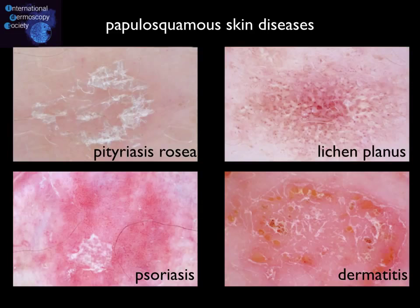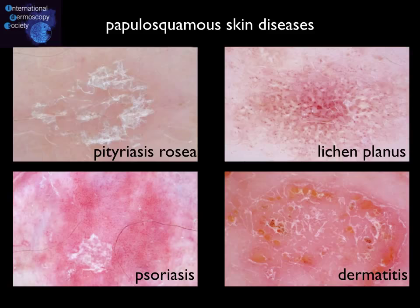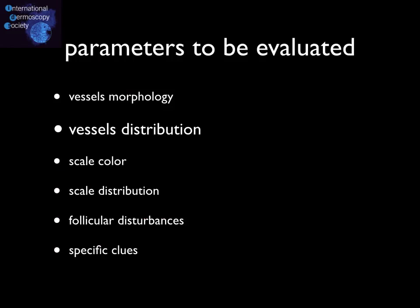However, the morphology of the vessels is not always enough to predict a specific diagnosis. For example, several very common diseases all display dotted vessels. In such cases, very often the distribution of vessels is the critical criterion for the differential diagnosis.